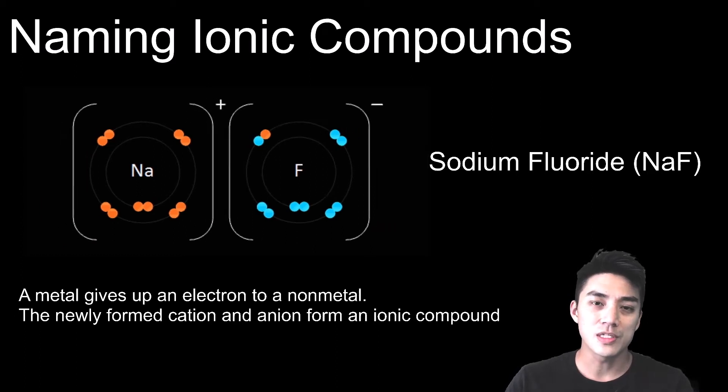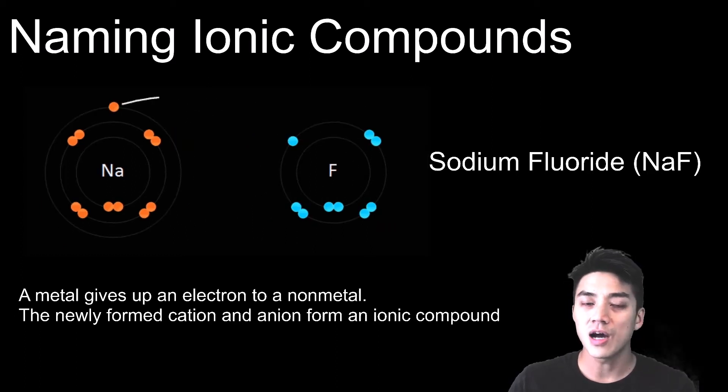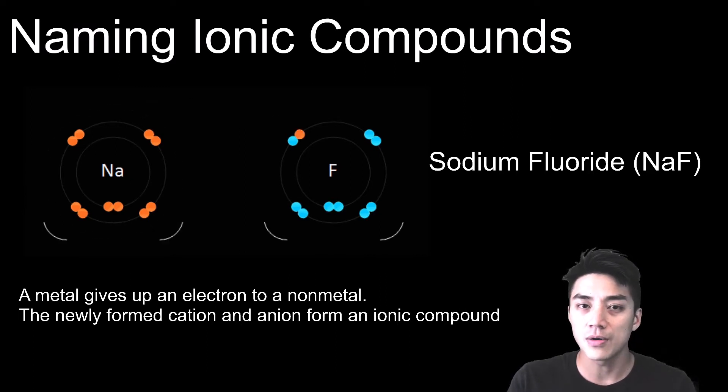Hey, what's up and welcome back to Wind Chemistry. Today we're going to talk about naming ionic compounds, which are compounds that are formed between a metal and a non-metal.